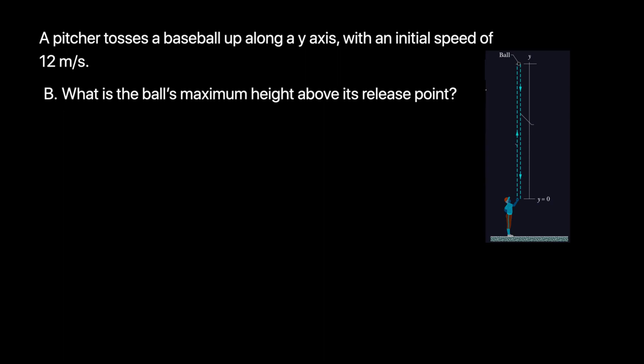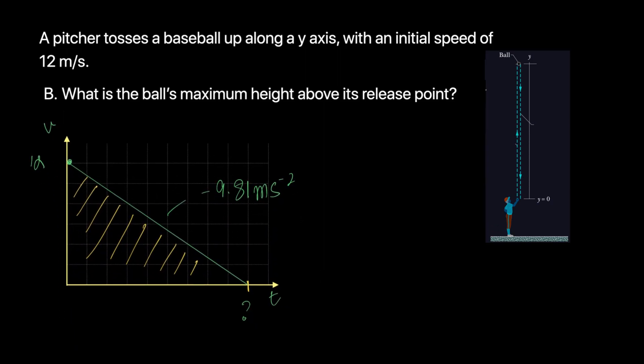From our previous graph, this is what we had, and we also calculated this value - it was 1.22 seconds. I said last time the area under the graph is the distance traveled in this amount of time, so if we calculate the area we can find out the distance.